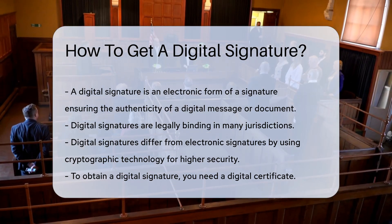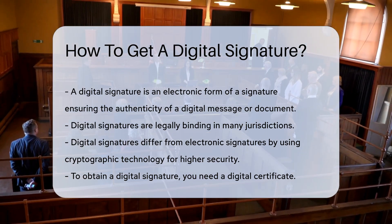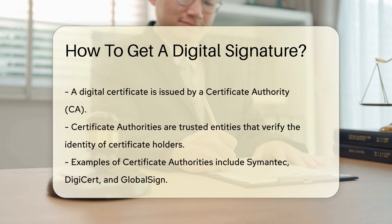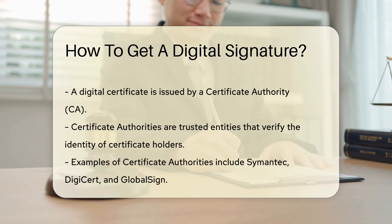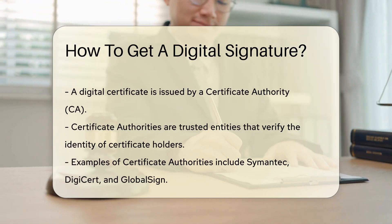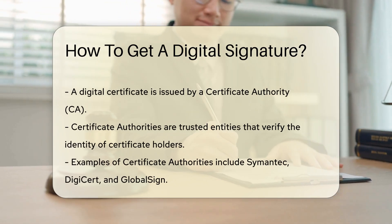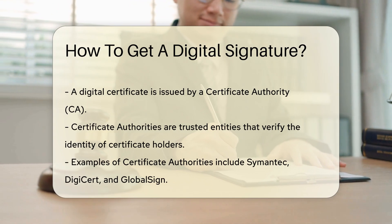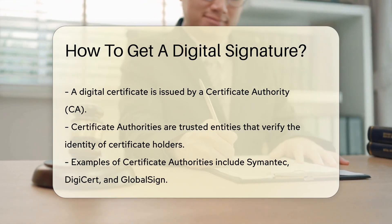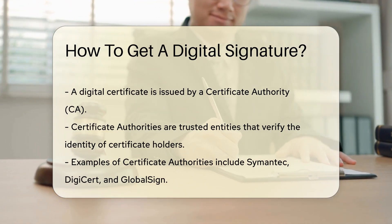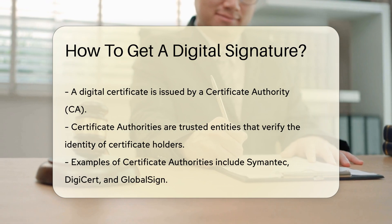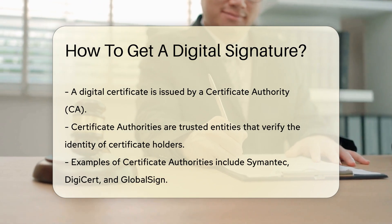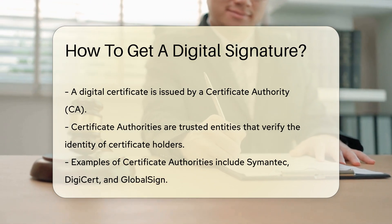To get a digital signature, you need to obtain a digital certificate. A digital certificate is issued by a Certificate Authority, or CA. A Certificate Authority is a trusted entity that verifies the identity of the certificate holder. Examples of CAs include Symantec, DigiCert, and GlobalSign.